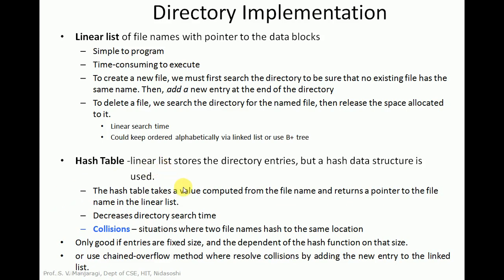In order to reduce the searching time of the linear list we can make use of a hash table. In the hash table we also make use of a linear list to store the directory entries, but a hash structure is also used. We make use of some hash function which takes the file name as input and computes some value. The hash table takes a value computed from the file name and returns a pointer to the file name in the linear list. The searching time will be decreased, but it may lead to collisions — situations where two file names hash to the same location.